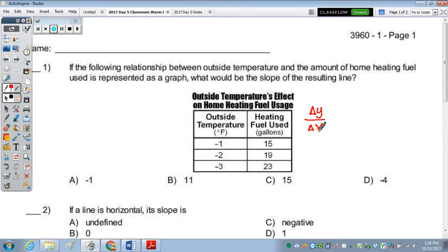Slope formula is change of y over change of x. So if we just pick two points, I'll use the first two. If you write down the coordinates of those two points, it would be negative 1, 15, and negative 2, 19.